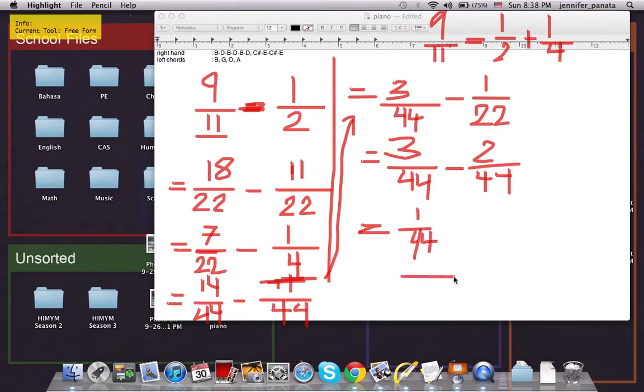And we are finished because 1 over 44 is a unit fraction, which we can't further eliminate anymore. So notice how we have 2 more unit fractions here.